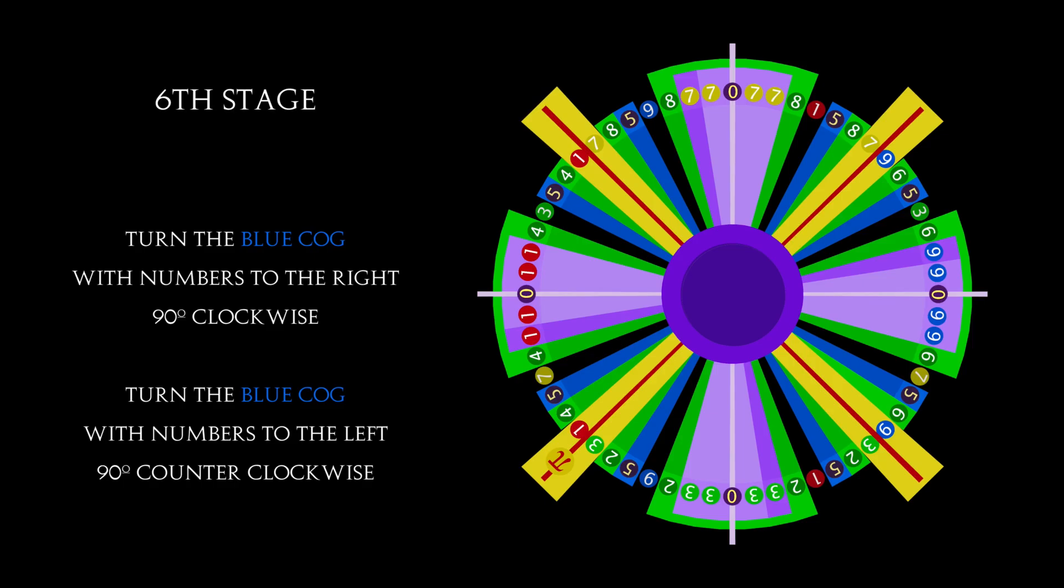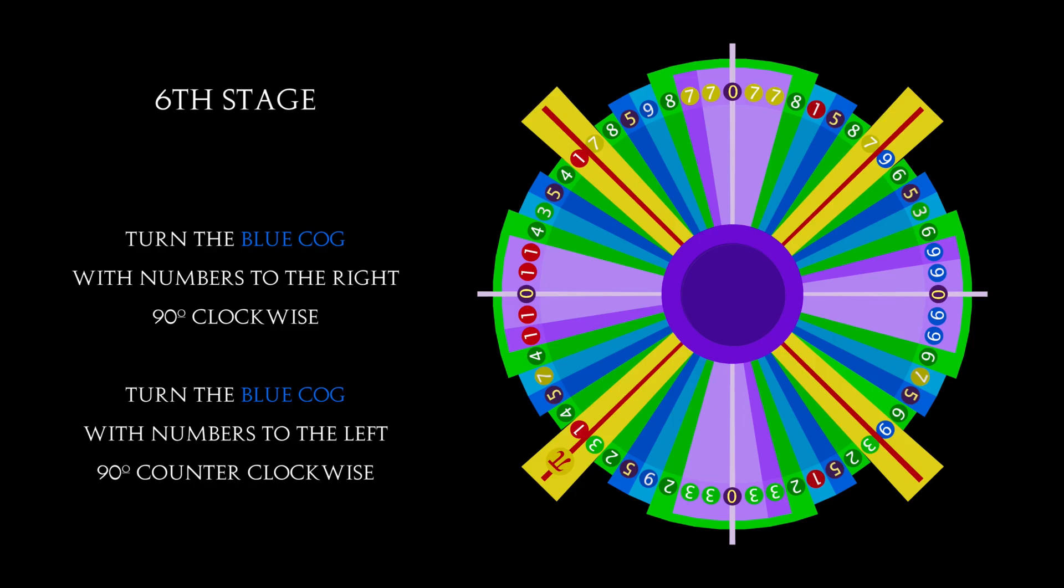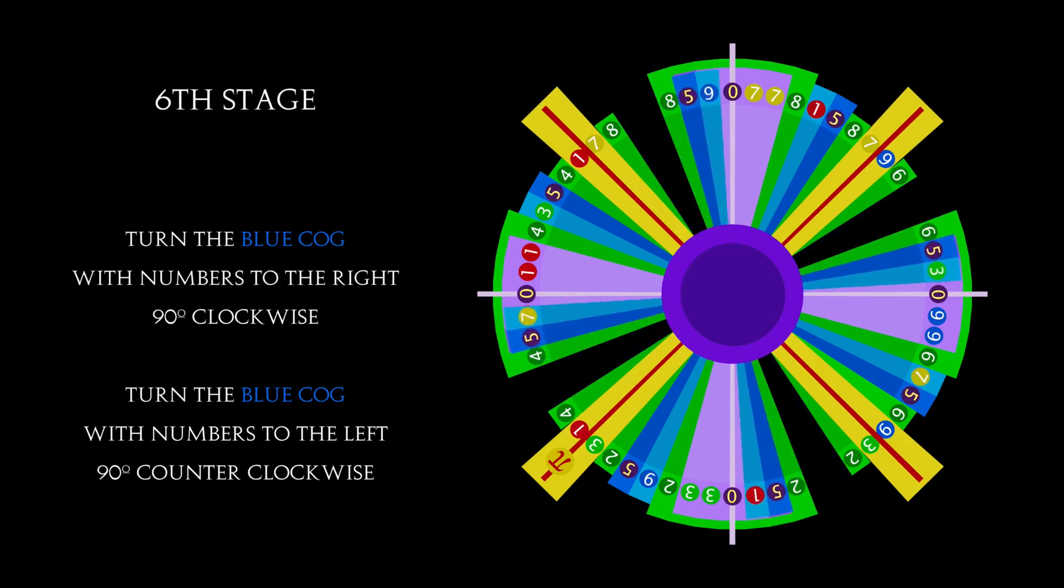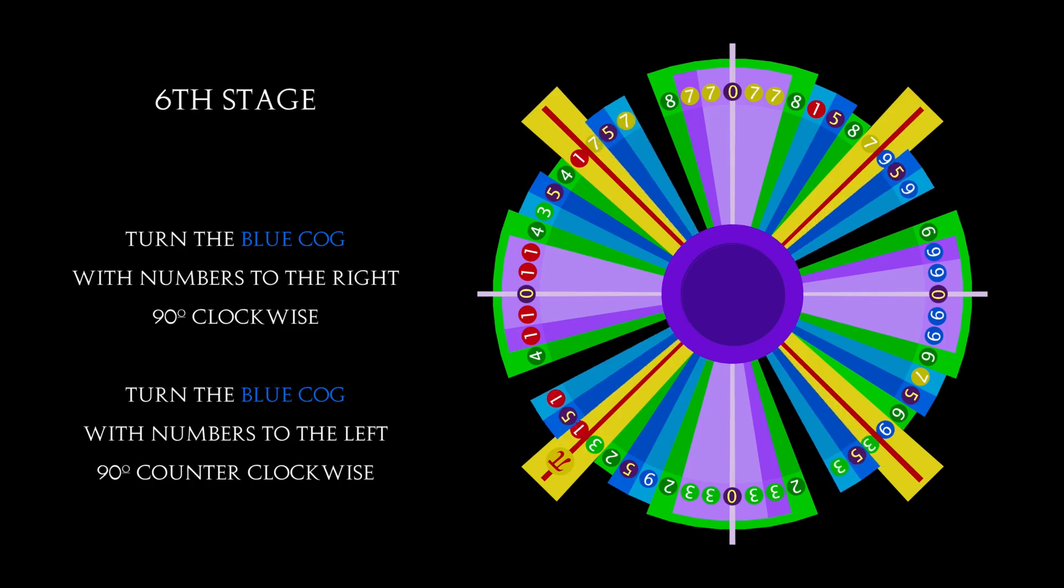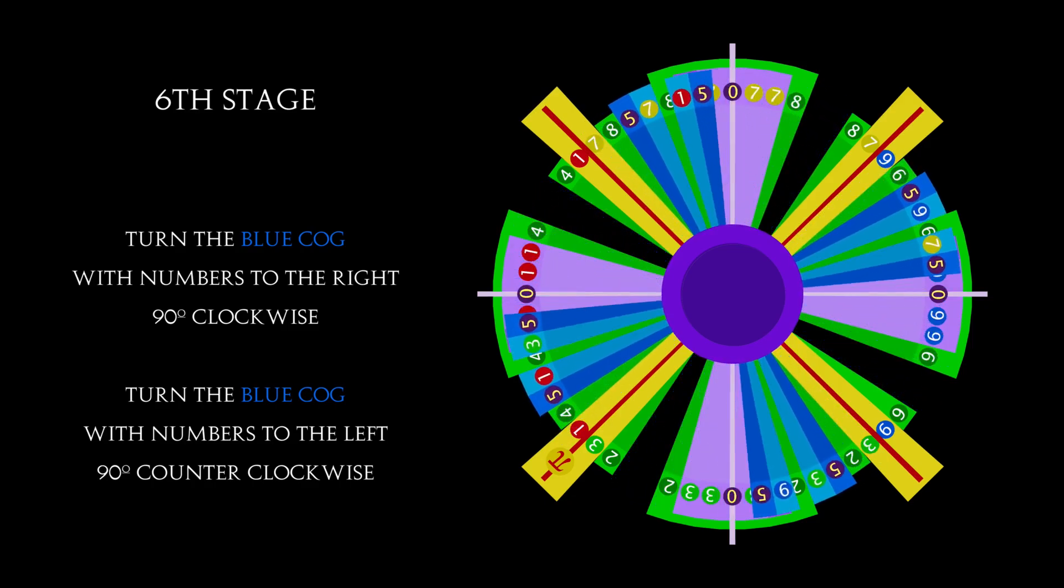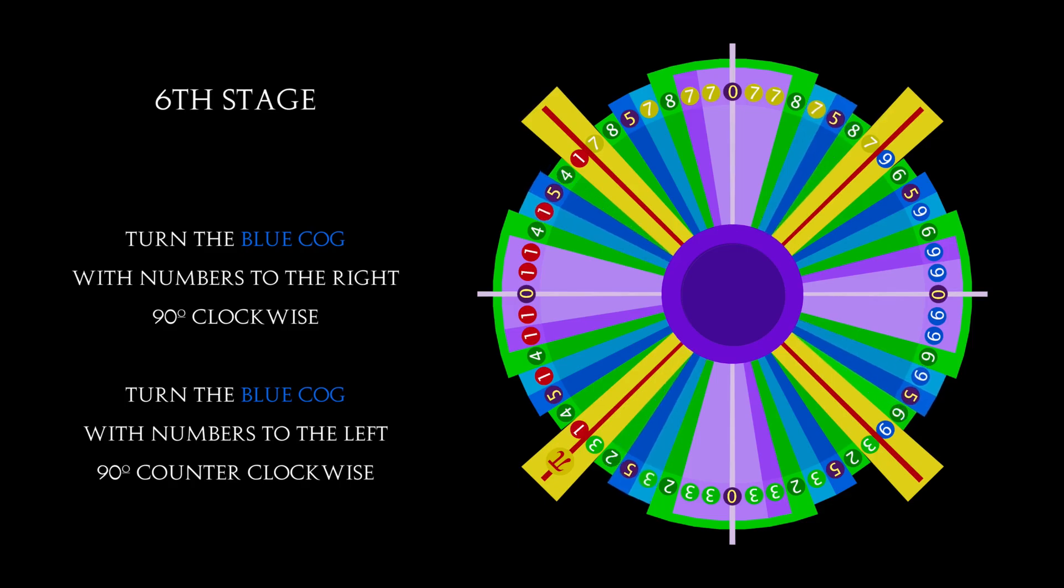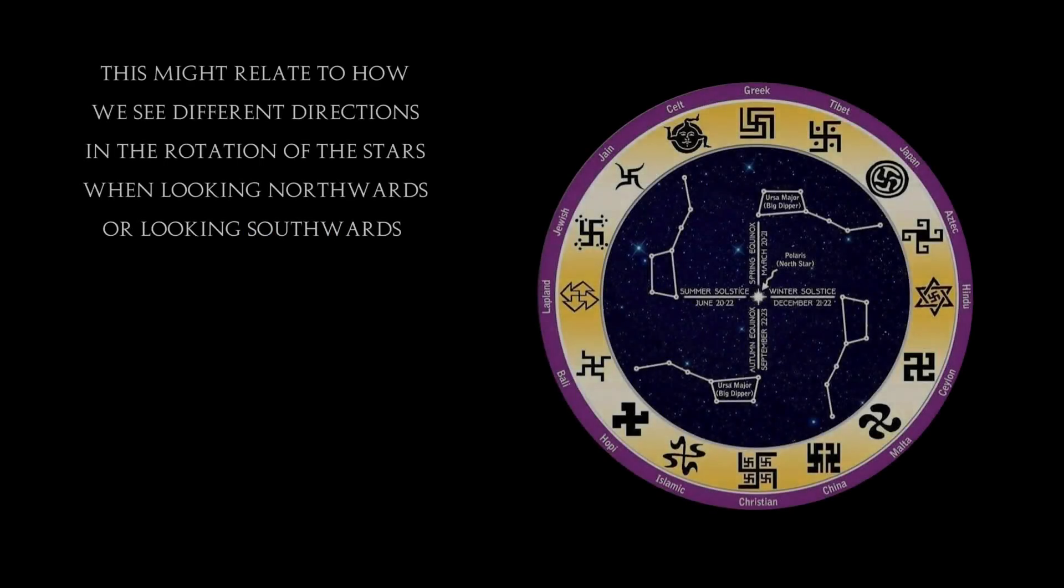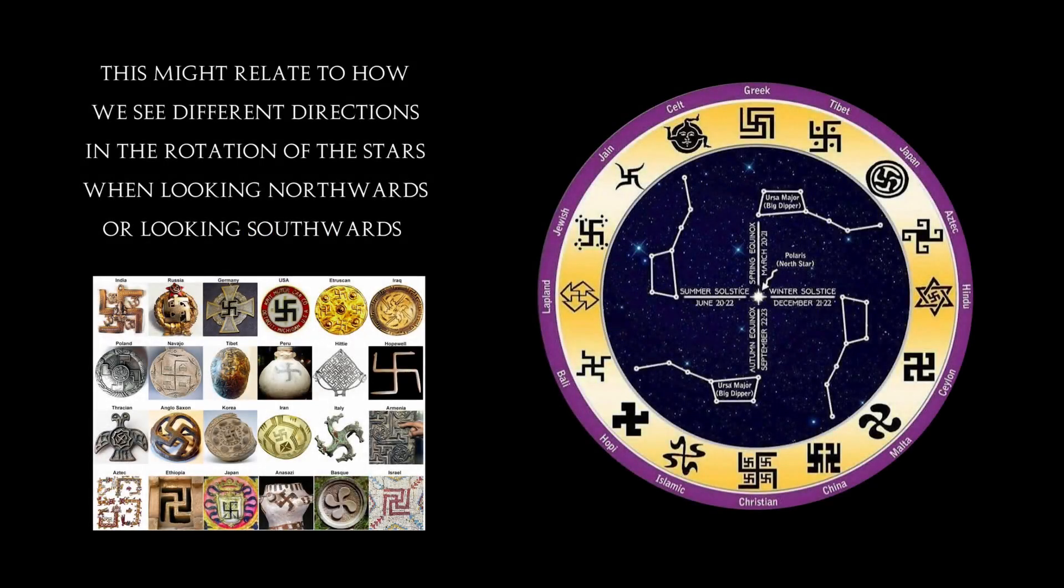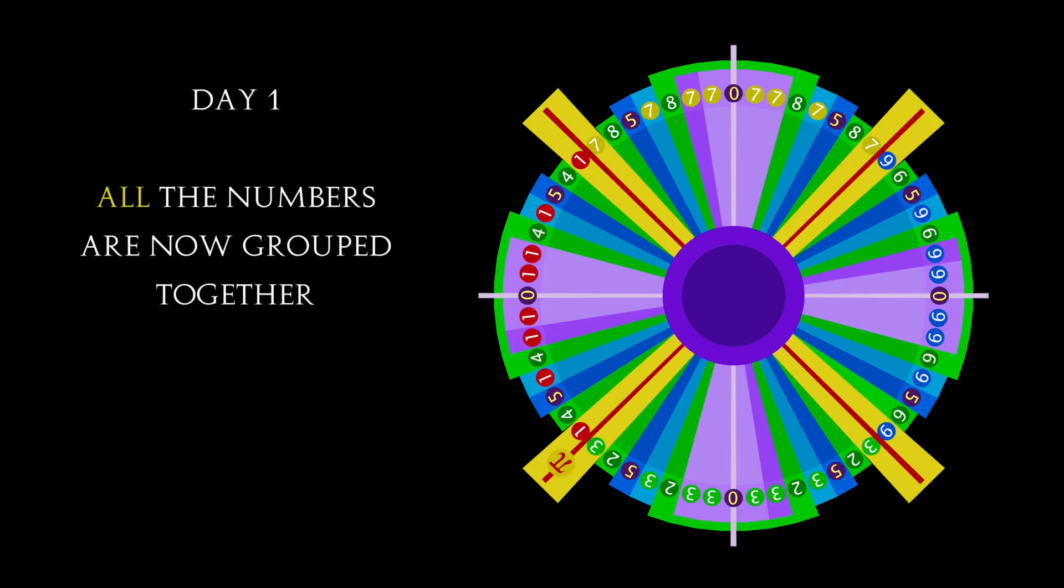Half of the number 5s have numbers to the right of them, and the other half have numbers to their left, revealing another 2 cogs of the mechanism. Turn the blue arm with numbers to the right 90 degrees clockwise, and turn the blue arm with the numbers to the left 90 degrees counter-clockwise. This might relate to how we see different directions in the rotation of the stars when looking northwards or looking southwards. All the numbers are now grouped together. This appears to be the first phase, or the first day of creation.